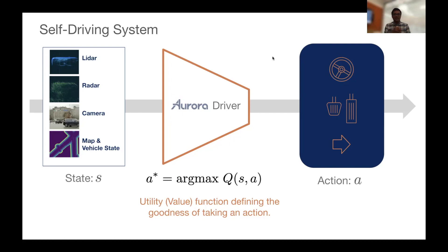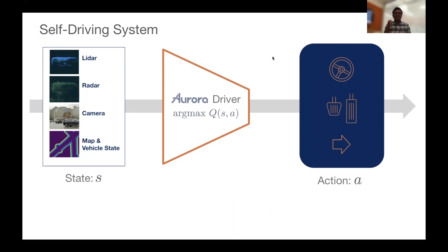And to do this we can define a utility function Q, which is a value function or action value function, that defines the goodness of taking any action at any given state. And that really is the crux of the Aurora driver, is that it's continuously trying to figure out how do I maximize the utility, how to maximize the value of taking any action. How good is it that I take a brake or throttle command? How good is it how much I steer? And should I turn on the turn signal indicator or not to show my intent? All of these together make up the Aurora driver.